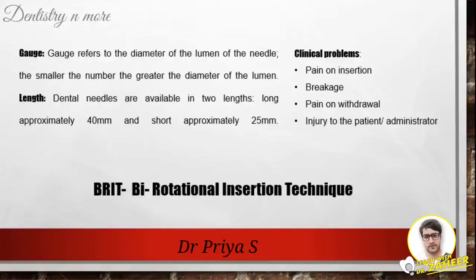A new approach to reducing needle deflection has been described as the bi-rotational insertion technique, or BRIC technique. In this technique, the operator rotates the needle in a back-and-forth rotational movement while advancing it through soft tissue, similar to endodontic instrumentation. It has been demonstrated that deflectional bending of a needle can be minimized or even eliminated regardless of the length or gauge, as long as the insertion is performed using the BRIC technique.